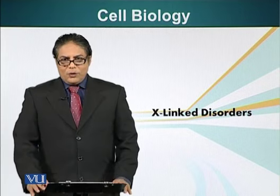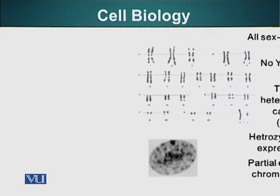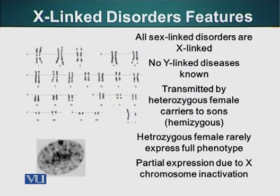In this module, we will talk about X-linked disorders. First of all, let me introduce you to the chromosomes. We have 46 chromosomes, 23 pairs. Out of these 46 chromosomes, 44 of them are autosomes and 2 are the sex chromosomes. X and Y chromosomes are called the sex chromosomes because they carry information.